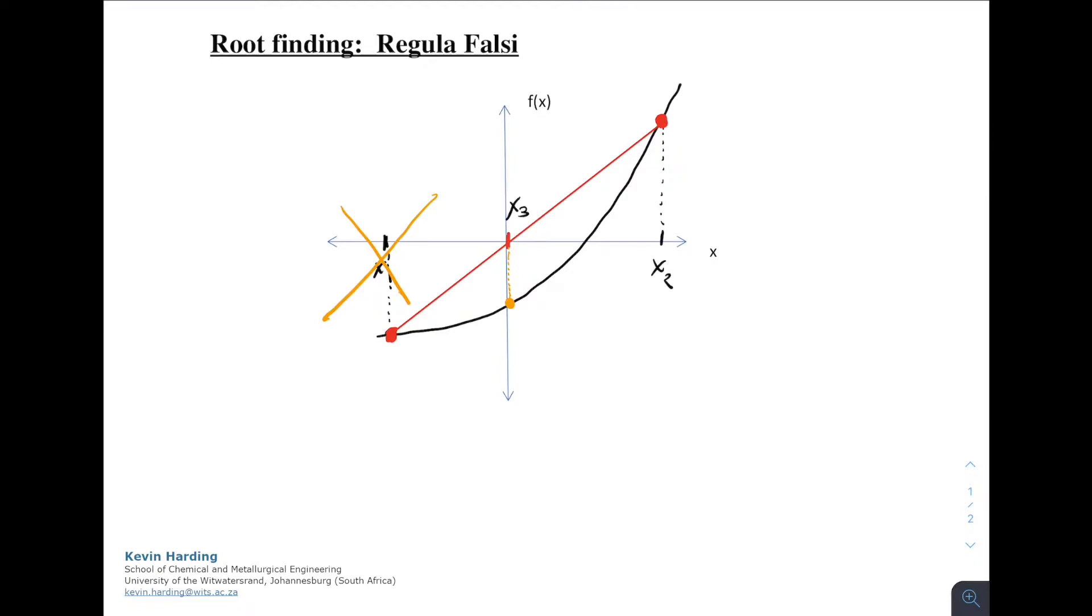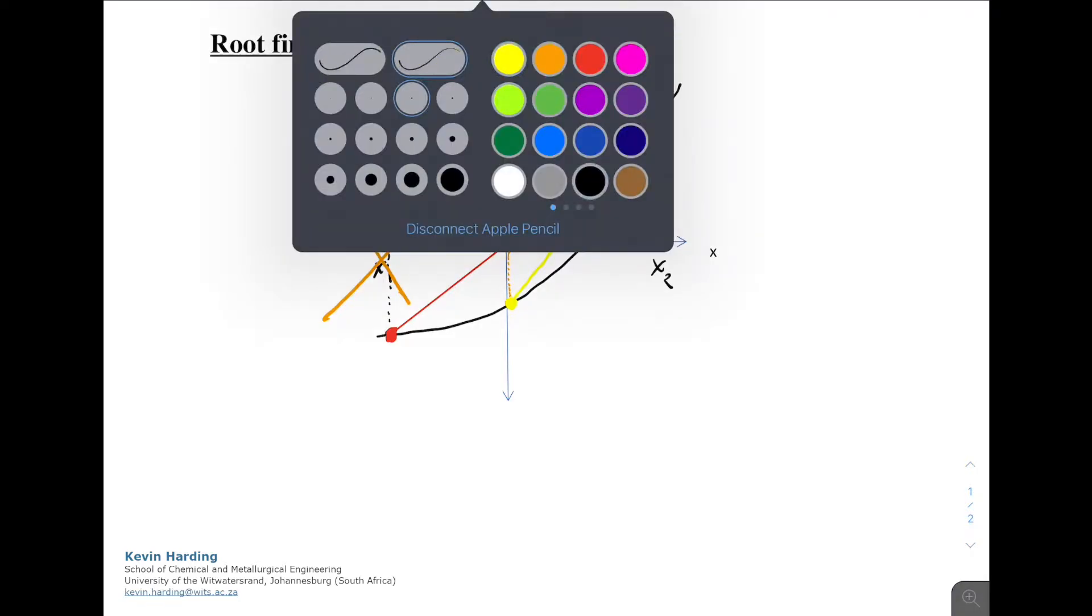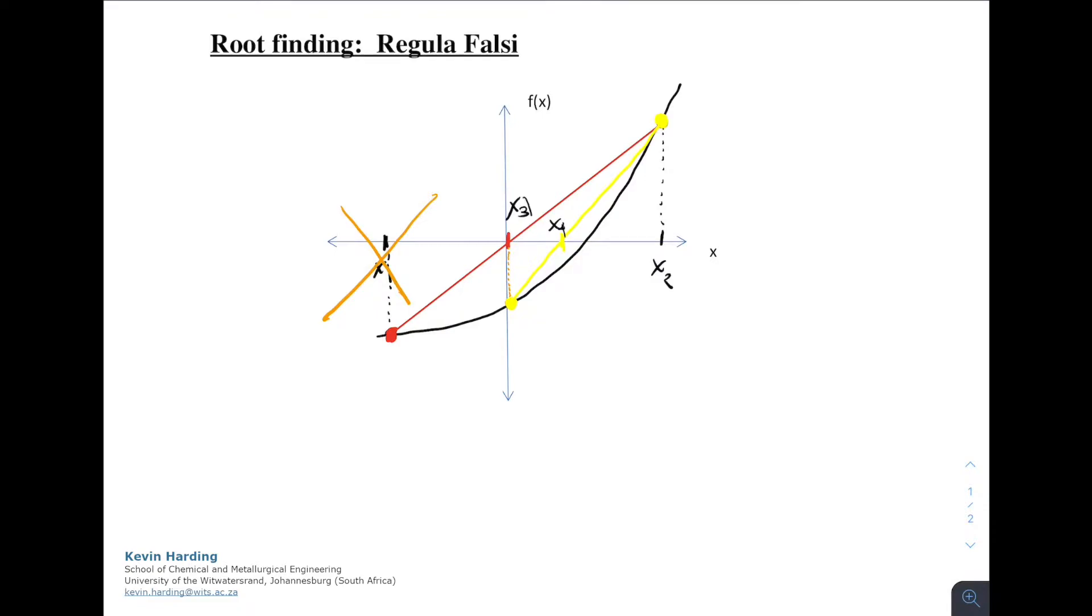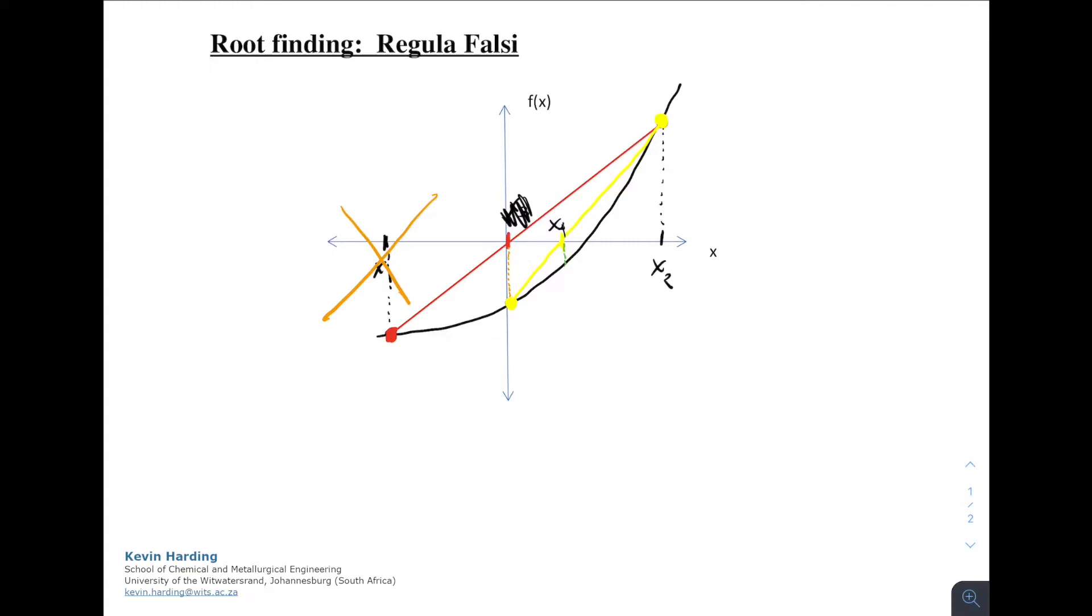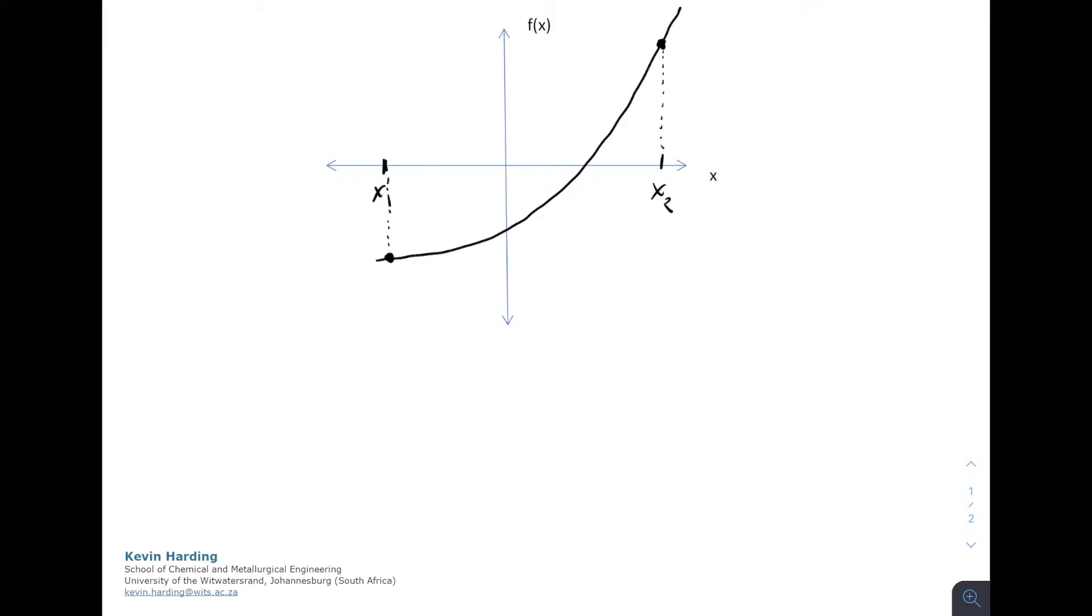If we'd found that this point was positive, we would have discarded the positive value. We now carry on iterating and find from this new x3 value, we find a straight line between x3 and x2 and we carry on finding new points x4 and each time we discard the point that has the same sign as this new point. So we give a step-by-step account of how to do Regula Falsi.